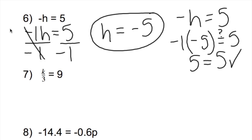Next one: k divided by 3 equals 9. I want to get that k by itself, so what operation is happening between the k and the 3? If you said division, you are correct — k is being divided by 3. So what is the opposite of dividing by 3? Multiplying by 3.